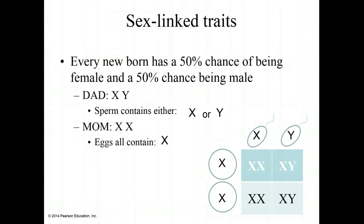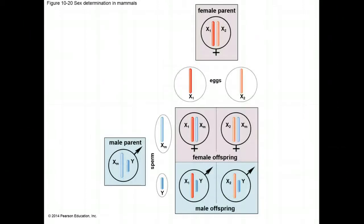Every infant born has a 50% chance of being female and a 50% chance of being male. Dad produces sperm during meiosis that have either the X chromosome or the Y chromosome, whereas mom produces eggs that all have the X chromosome. Ultimately, dad determines the sex of the baby. If an X sperm from dad fertilizes mom's egg, it will be a girl. If a Y sperm fertilizes mom's egg, it will be a boy. For organisms in which males are XY and females are XX, the sex chromosome carried by the sperm determines the sex of the offspring.